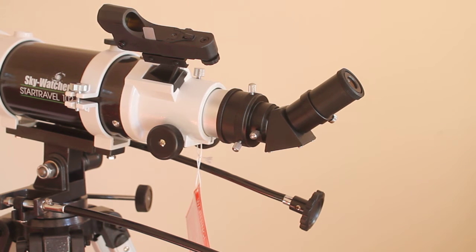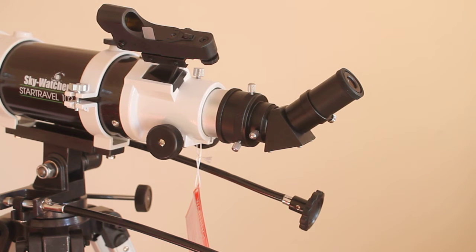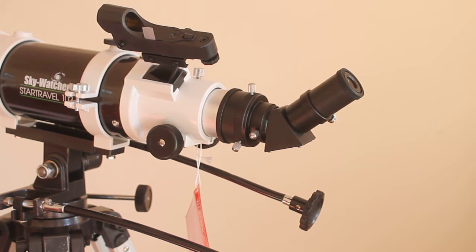In a previous video we had a look at this particular scope, and I said I wouldn't go through everything in one video. So today we're going to have a quick look at how to put on a 45-degree erect image 2-inch diagonal.